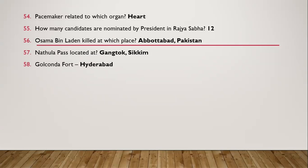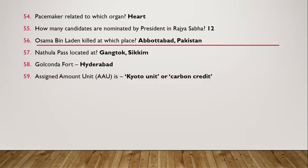Question 58: Golconda Fort — it is in Hyderabad. Question 59: Assigned Amount Unit (AAU) is Stage 4 — Kyoto unit or carbon credit.